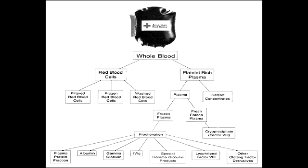What blood product would you provide in case of acute blood loss or severe anemia? You would give packed red blood cells. Packed red blood cells would increase the hemoglobin concentration as well as oxygen-carrying capacity.